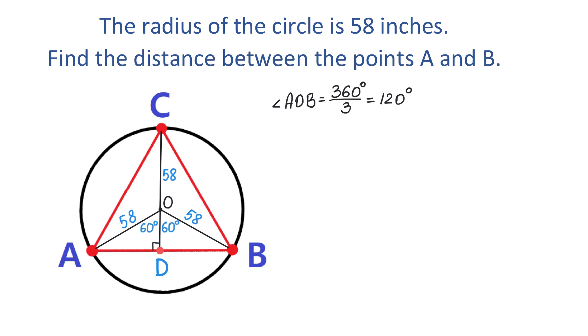And now we have two right triangles that have the same size and the same shape. Now let's take a look at the triangle AOB. In this triangle, we know one acute angle of 60 degrees and the hypotenuse of 58 inches. We can use the sine function to find the opposite side AD.